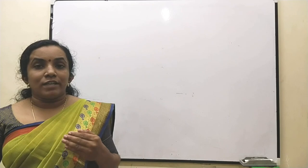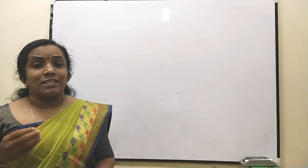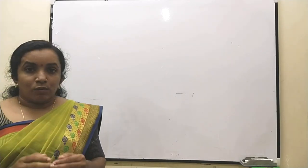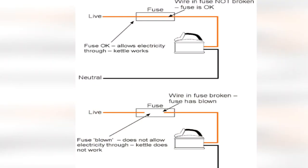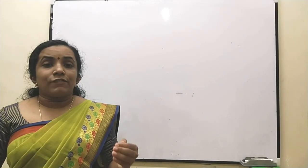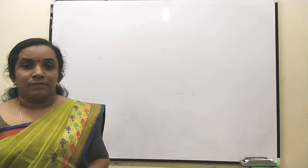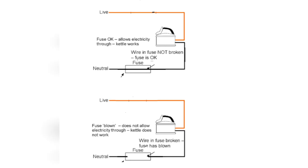A copper wire is unsuitable as a fuse wire because it has low resistance and a high melting point. A fuse wire is always connected to the live wire because if it is connected to the neutral wire and the fuse melts, the appliance would still be connected to the high-voltage live wire, and a person touching it would receive a fatal shock.